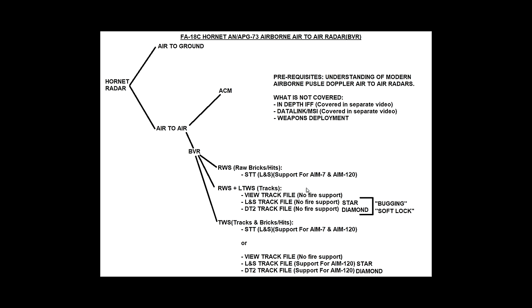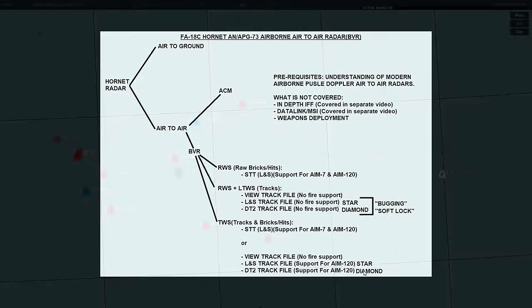Under TWS, we can also view a track file — one at a time — with no fire support. In addition, we can get an L&S and a DT-2 — primary and secondary targets. The difference with track while scan is that you can have fire support for the AIM-120 with an L&S and a DT-2. Same designations apply: star and diamond.